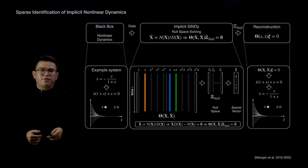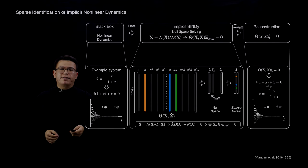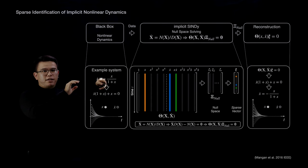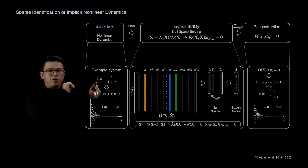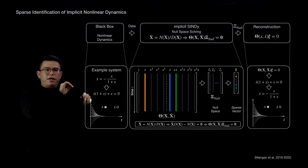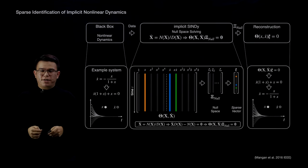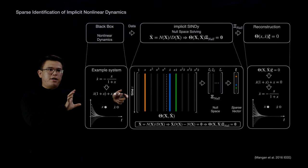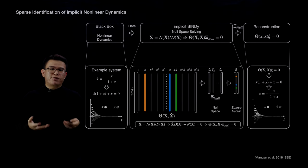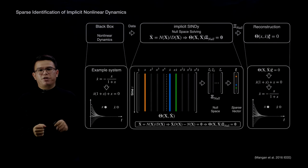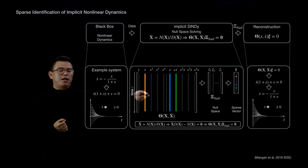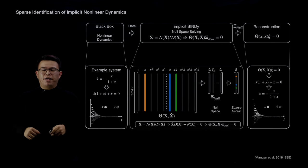In order to fix this problem, Mangan et al. came up with an idea called implicit CINDY. Instead of directly identifying the rational term, we can identify its analogous implicit equation. For example, multiplying the (1 plus x) term on both sides yields an implicit equation, and once we identify it we can symbolically back-solve for x-dot to get the rational form. Implicit CINDY allows a combination of state vector x and state derivative x-dot in the library, then solves for a sparse null-space vector that selects a few terms generating the implicit equation.